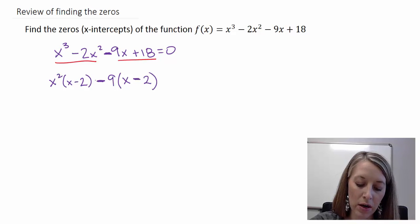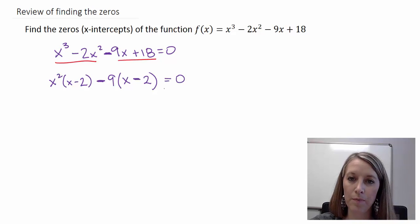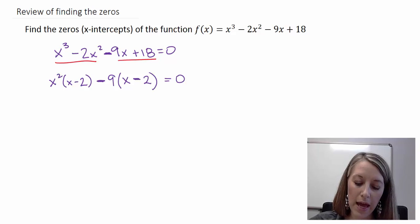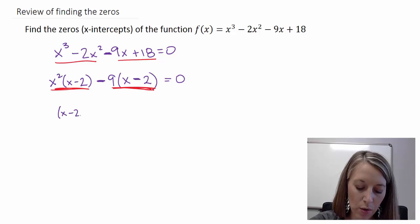Remember, if this sign here in the middle is negative, that switches all of my signs back there. This is still equal to zero. In your factor by grouping technique, we have two terms, one here, one there. We notice that we have the grouping of x minus 2 in common between these two terms. If we take that out, that leaves me with x squared minus 9. That finishes up our factor by grouping technique.